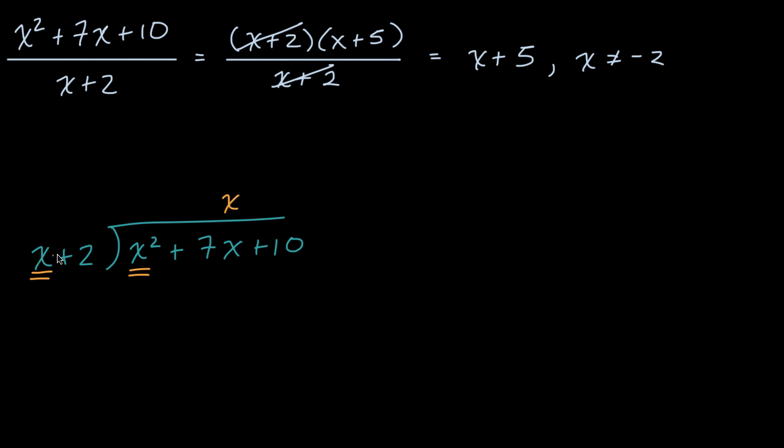And then you take that x and you multiply it times this entire expression. So x times two is two x. Put that in the first degree column. X times x is x squared. And then we want to subtract these things in yellow from what we originally had in blue.